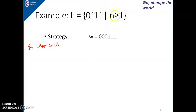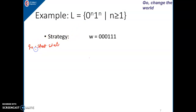Let us take this particular string — it is clearly a valid string and should be accepted by the machine because it has three zeros followed by three ones. Let q0 be the start state of the machine, and let the read-write head point to the first symbol of the string to be scanned.